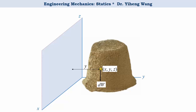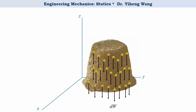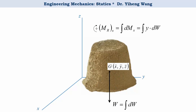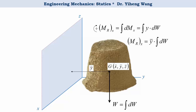For convenience, let's set a positive moment to be clockwise. Therefore, dMx equals y times dw, and the resultant moment about the x-axis is the integration of dMx, or the integration of y·dw. If we replace this distributed load by the concentrated force — equal to the integration of dw in magnitude — positioned at the center of gravity with coordinates x-bar, y-bar, and z-bar, the force W needs to produce the same moment about the x-axis, which is the moment arm y-bar times the integration of dw. By comparison, y-bar equals the integration of y·dw divided by the integration of dw.